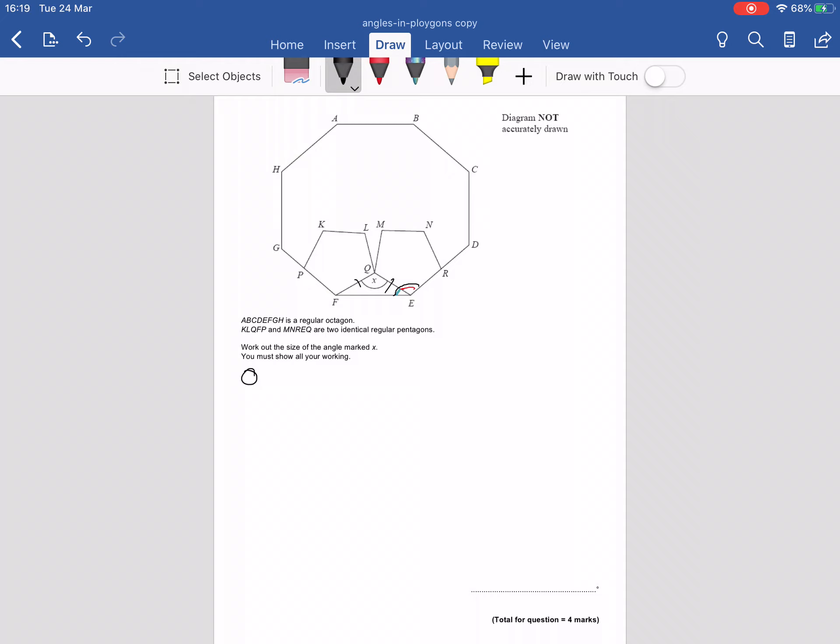So for the octagon, I'm going to work out the interior angle. I'm going to use exterior angle equals 360 divided by the number of sides. So I've got my calculator here. 360 divided by 8, which is the number of sides, so it's 45 degrees. And that's the exterior angle.